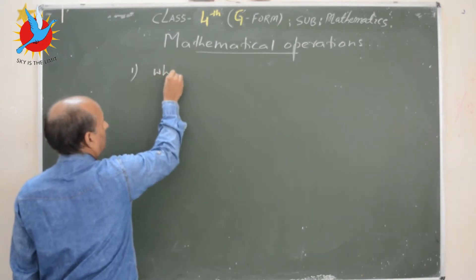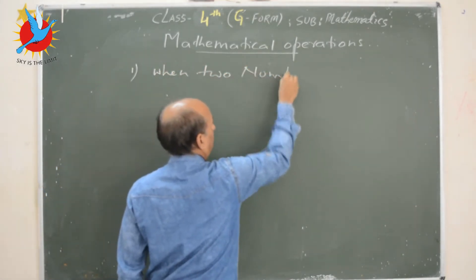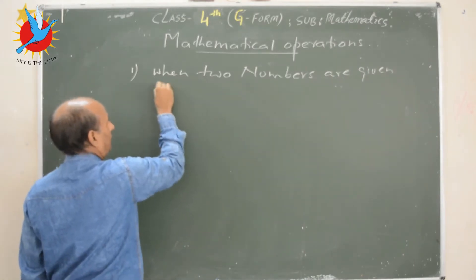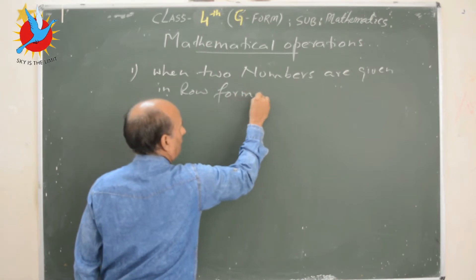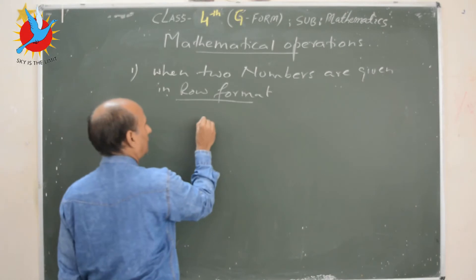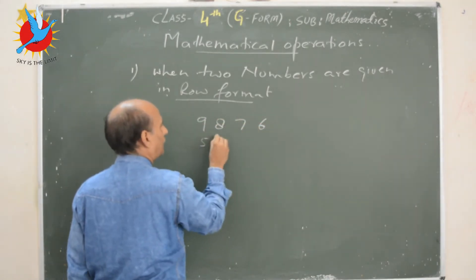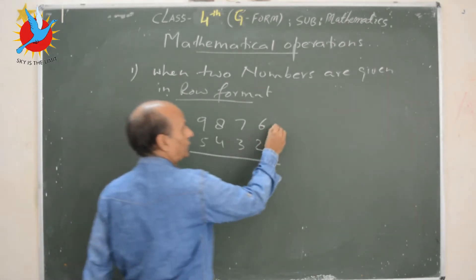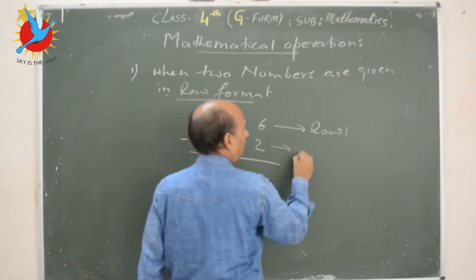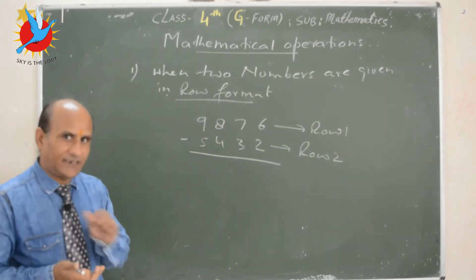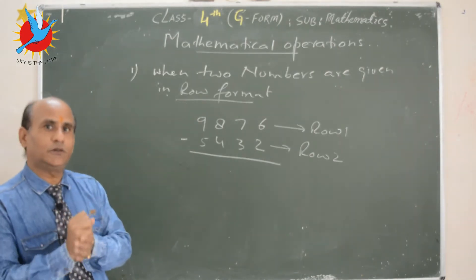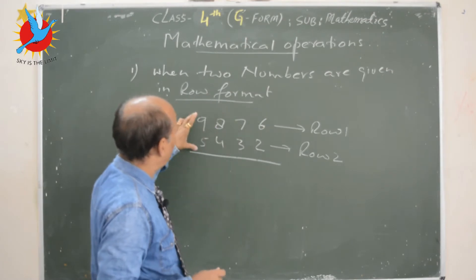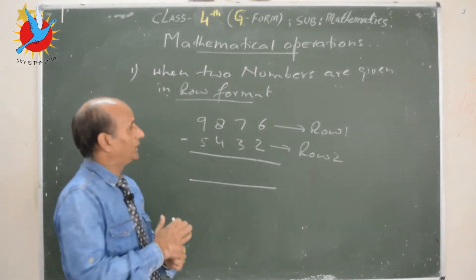For the first form, when two numbers are given in row form, let us take one example: 9 8 7 6 and 5 4 3 2. These are the two numbers — this is row one and this is row two. If the number is given in this way, then we will subtract column wise: first column, second column, third column, and the last one.